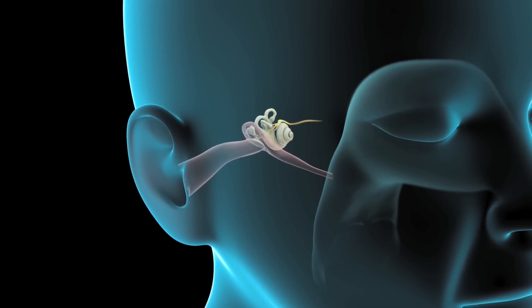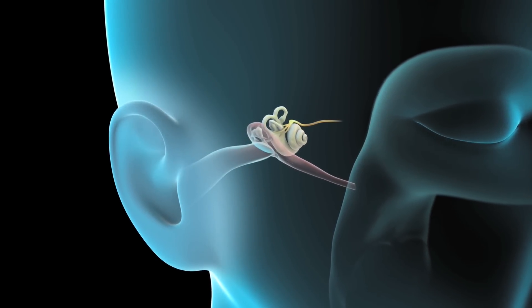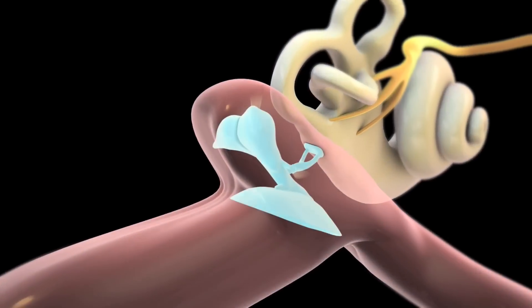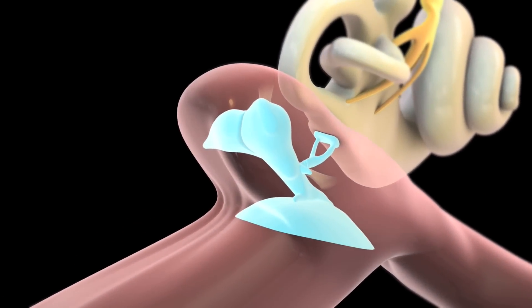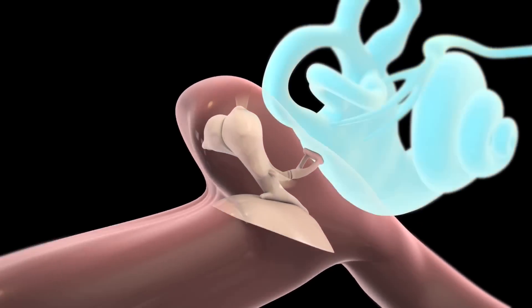Your ear has three main parts: the outer, middle, and inner ear.